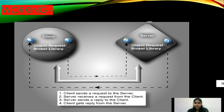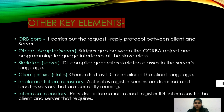The other key elements of CORBA are as follows. First, the ORB-core, which carries out the request-reply protocol between client and server. Second, the Object Adapter Server, which bridges the gap between the CORBA object and programming language interfaces of the slave class. Third, Skeletons (server-side): the IDL compiler generates skeleton classes in the server's language. Fourth, Client Proxies (Stubs), generated by the IDL compiler in the client's language. Fifth, the Implementation Repository, which activates and registers servers on demand and locates servers that are currently running. Sixth, the Interface Repository, which provides information about registered IDL interfaces to clients and servers that require it.